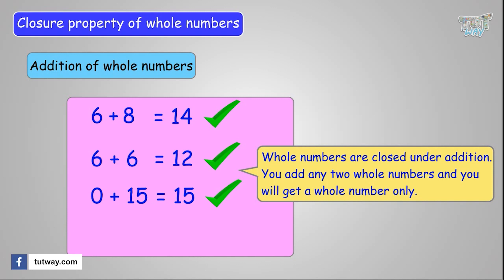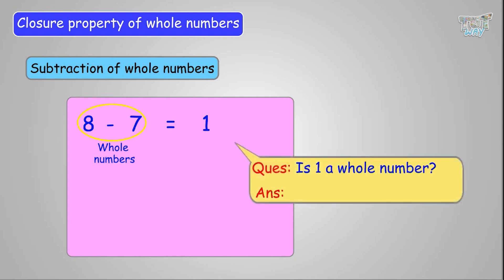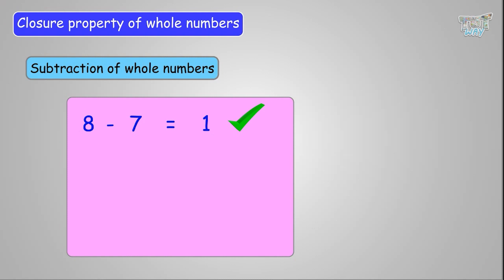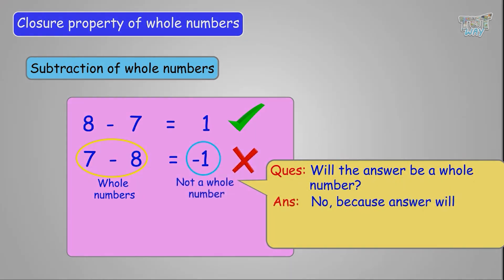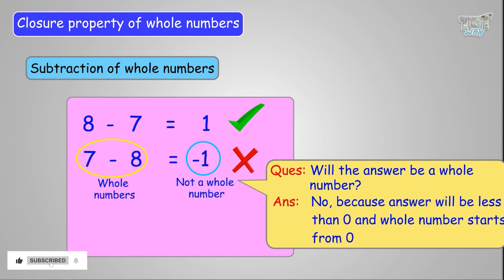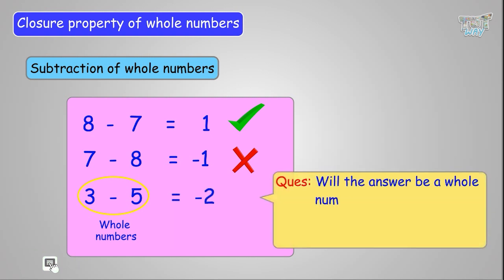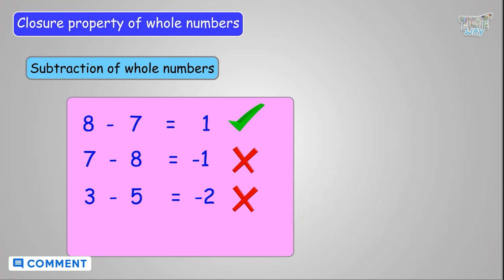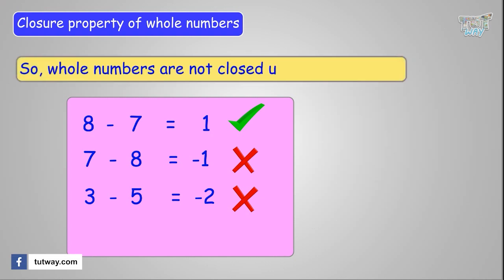Now let's see the results for closure under subtraction. Take two whole numbers and subtract them: 8 minus 7 gives 1, and 1 is a whole number. But if you subtract 8 from 7, the answer is less than 0, and whole numbers start with 0, so the answer is not a whole number. Similarly, subtracting 5 from 3 gives a result less than 0. So if we subtract two whole numbers, the result may not be a whole number — whole numbers are not closed under subtraction.